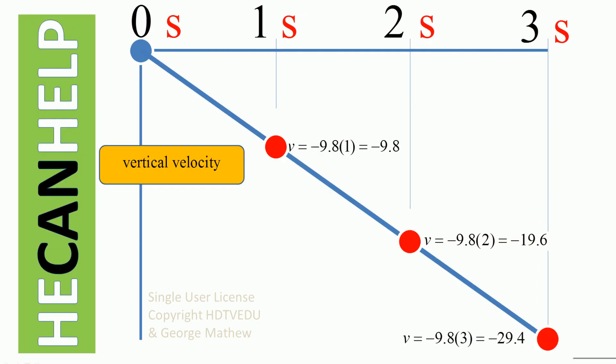Negative 9.8 at t equals one. At t equals two, negative 19.6. At t equals three, negative 29.4. And you can go on like that. You join all those points and what do we get? Straight line passing through the origin.